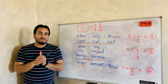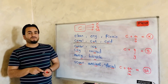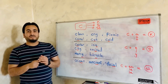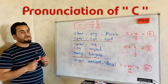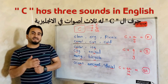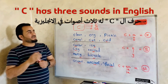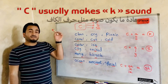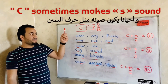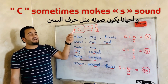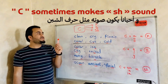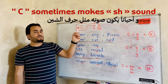Hello everyone, welcome back to English pronunciation with Mr. Habas. Today I'm going to be talking about how to pronounce the C letter in English. C has three sounds in English: it usually makes a K sound, and it sometimes makes an S sound and sometimes a SH sound.